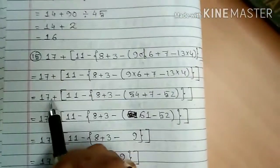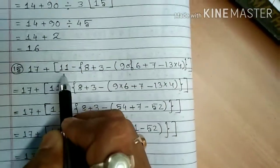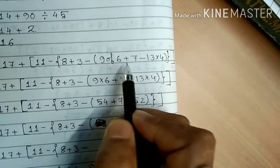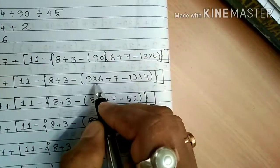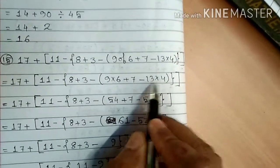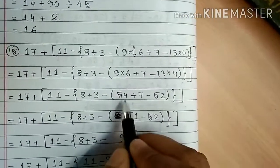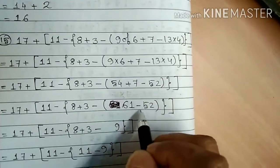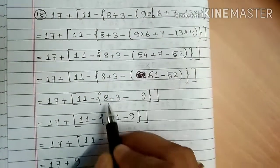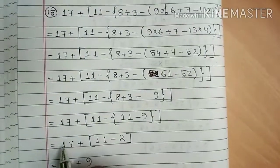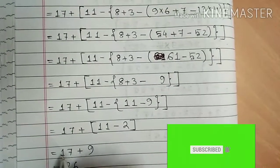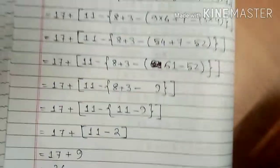Similarly, question number 15: 17 plus [11 minus {8 plus 3 minus (9 of 6 plus 7 minus 13 into 4)}]. 'Of' means multiply, so 9 into 6 gives 54, and 13 into 4 gives 52. Then 54 plus 7 gives 61, and 61 minus 52 gives 9. Next, 8 plus 3 gives 11, and 11 minus 9 gives 2. Finally, 17 plus (11 minus 2) gives 17 plus 9, which equals 26. This is about exercise 2.